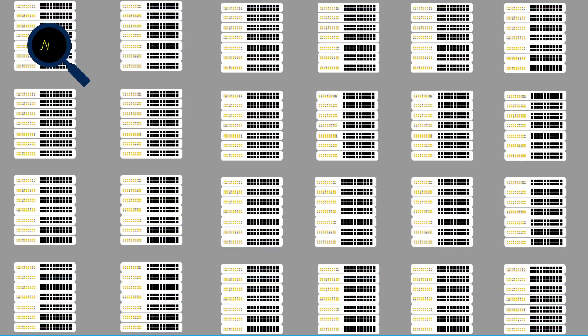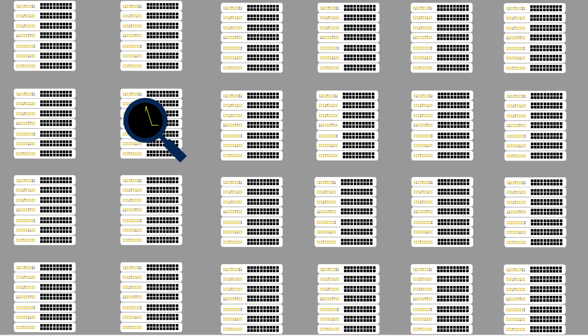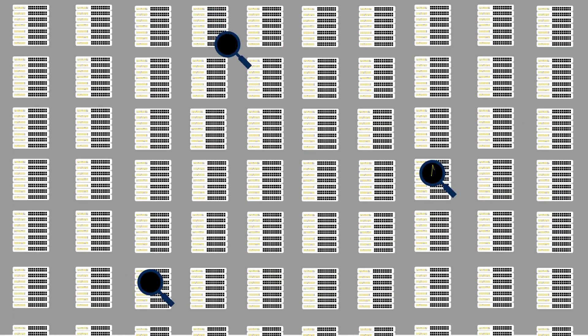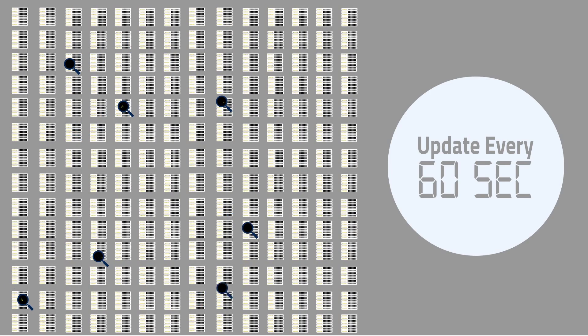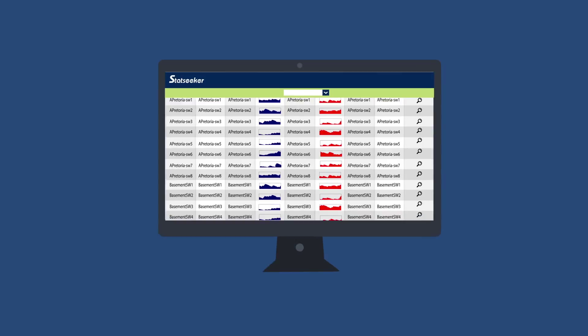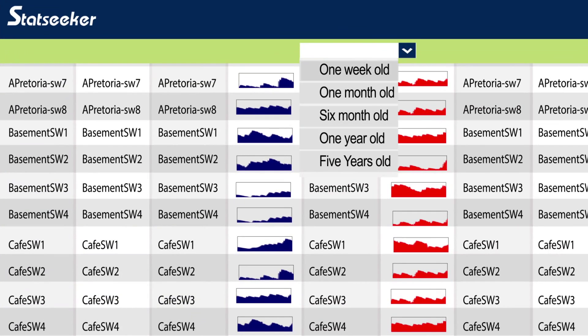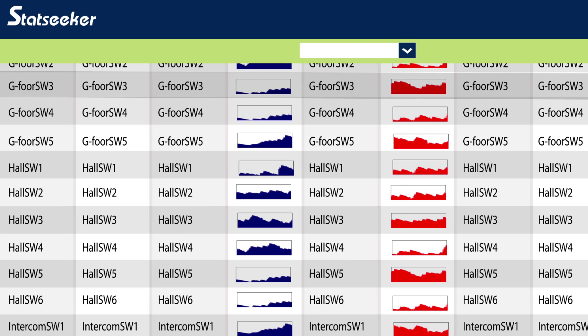StatSeeker monitors all the interfaces on your entire network, regardless of its size, every 60 seconds. StatSeeker never averages, rolls up, or deletes your monitoring history.